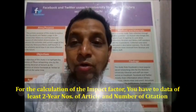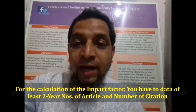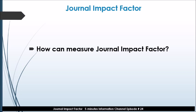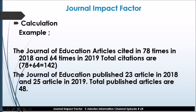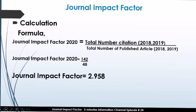For the calculation of impact factor, you need at least two years of publication data for any specific journal. For example, suppose the Journal of Education articles were cited 78 times in 2018 and 64 times in 2019, giving total citations of 142. The journal published 23 articles in 2018 and 25 articles in 2019, for a total of 48 published articles.